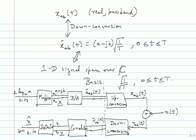Down conversion is just shifting in frequency, so it won't change the noise statistics. Correlation is what will make your noise discrete, as we showed. If you do correlation in passband itself directly, you will get the exact same vector Y. The passband/baseband distinction is just a signal processing convenience — as far as the vector model is concerned, it is exactly the same for both passband and baseband correlation.